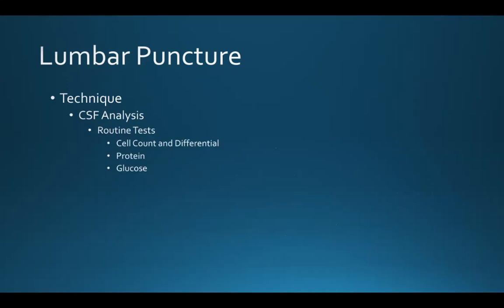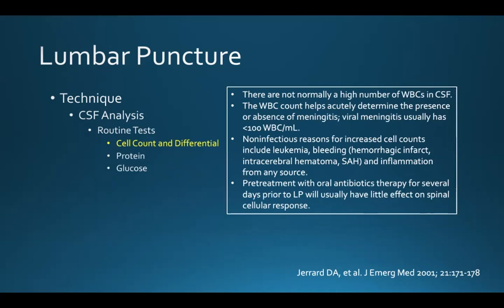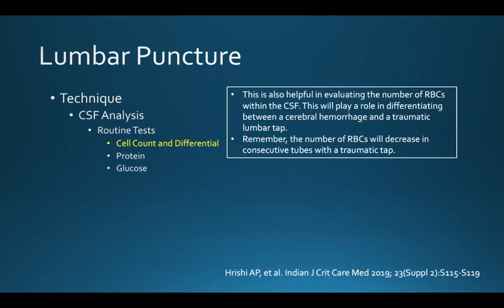Once we're done looking at the CSF, we send it to the lab and ask for several routine tests: cell count differential, protein, and glucose. Normally there's not a high number of white blood cells in the CSF. The white blood cell count helps acutely determine the presence or absence of meningitis. Viral meningitis usually has less than 100 white blood cells per milliliter. Non-infectious reasons for increased cell counts include leukemia, bleeding, and inflammation. Pre-treatment with oral antibiotics for several days prior to an LP usually has little effect on spinal cellular response. A cell count is also helpful in evaluating red blood cells within the CSF to differentiate between a bleed and a traumatic tap — red blood cell counts will decrease in consecutive tubes with a traumatic tap.